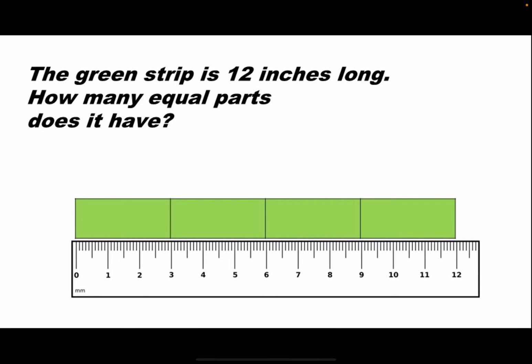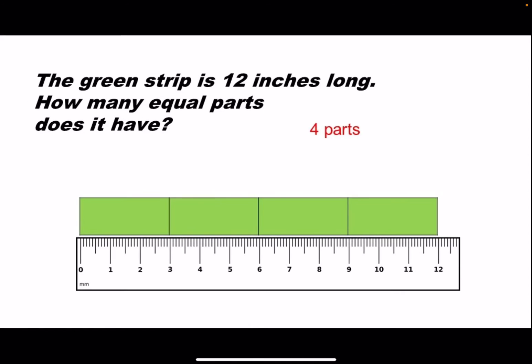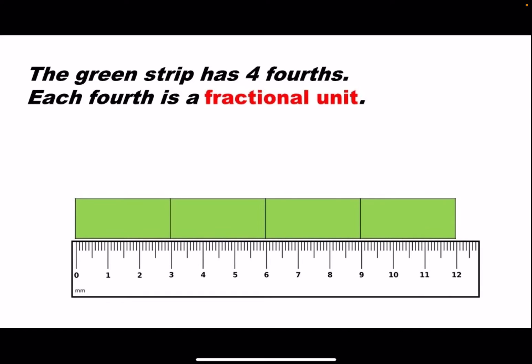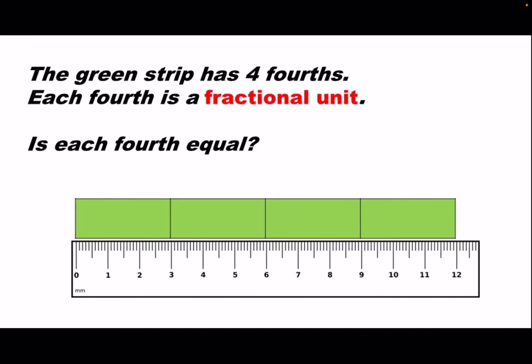The green strip is 12 inches long. How many equal parts does it have? It has four parts. The green strip has four fourths. Each fourth is a fractional unit. Is each fourth equal? Yes, each fourth is three inches.